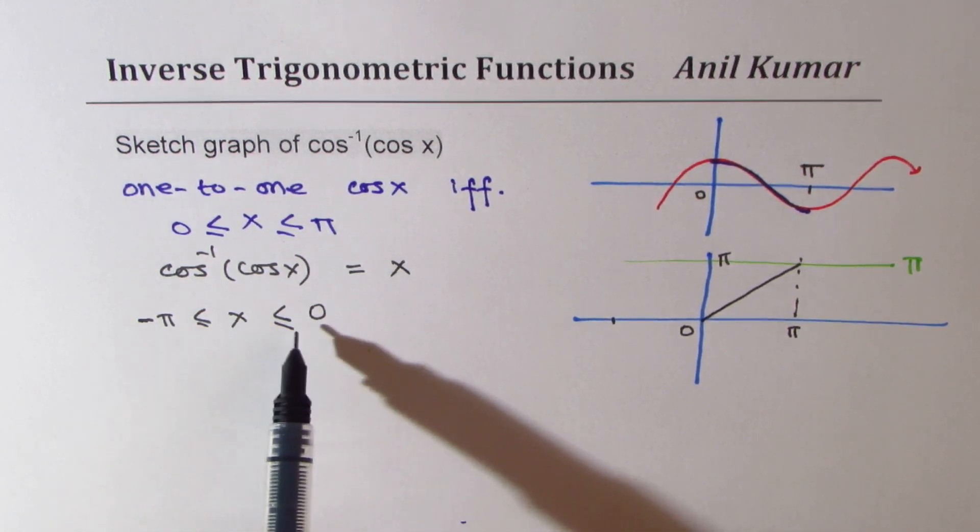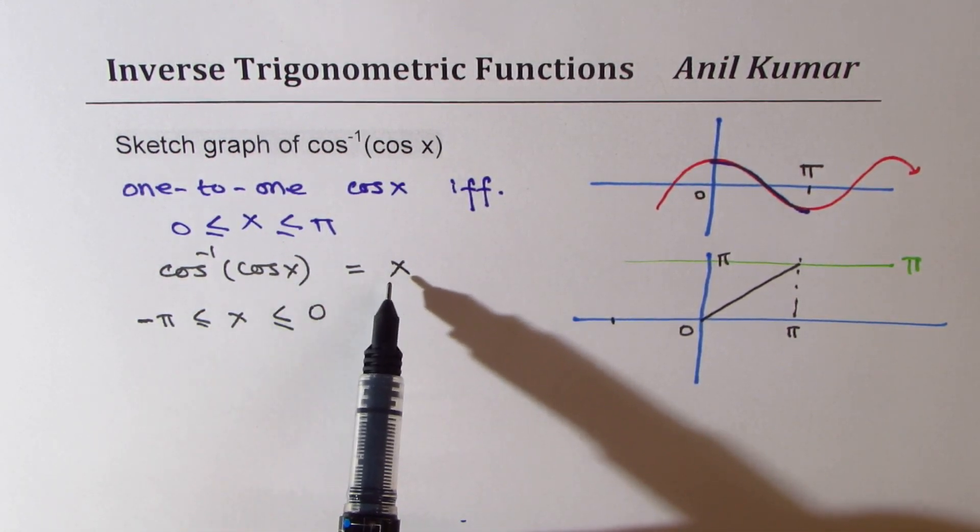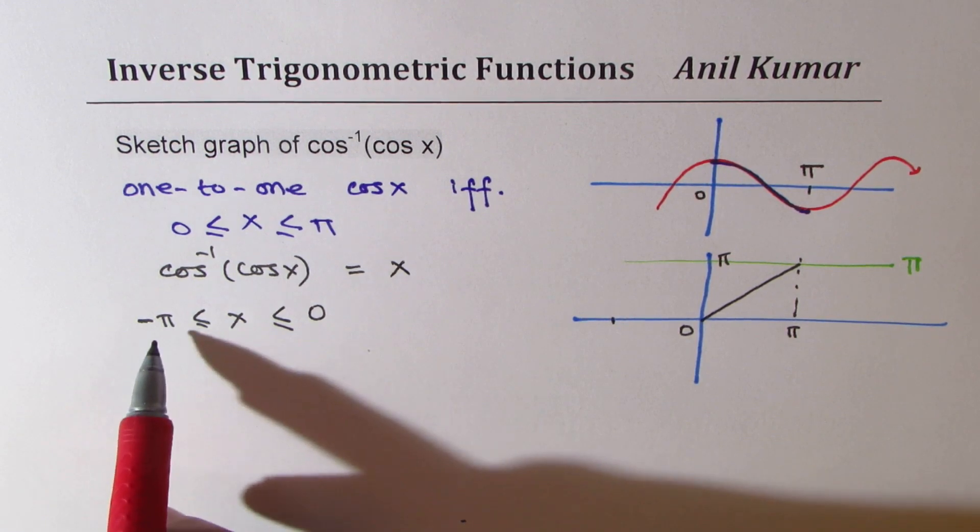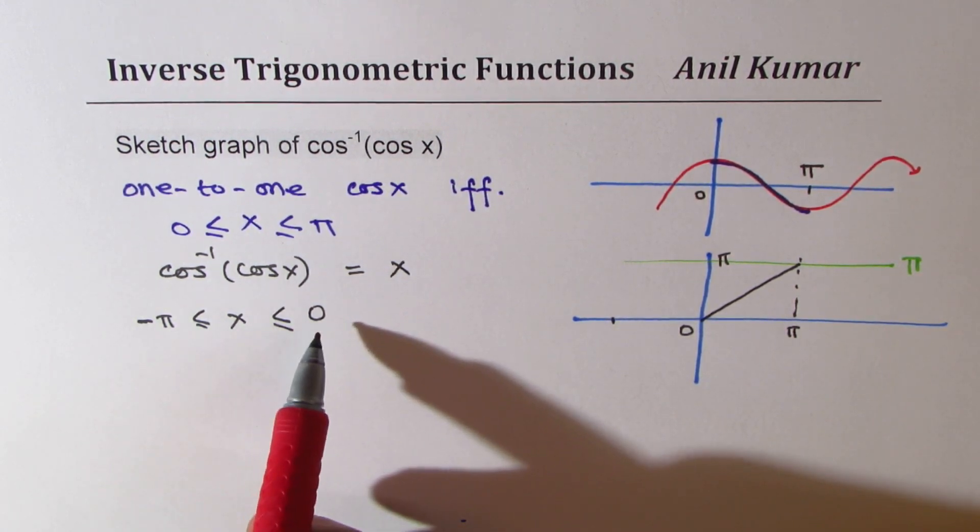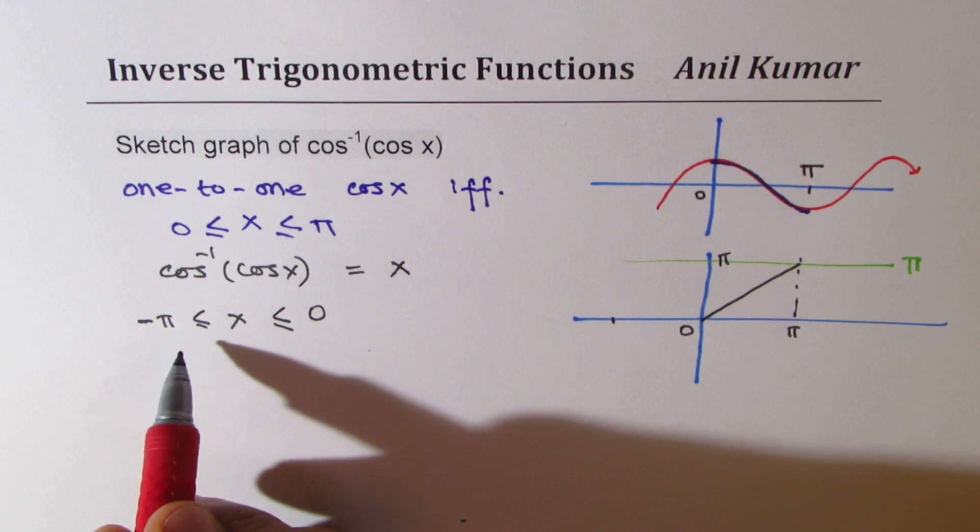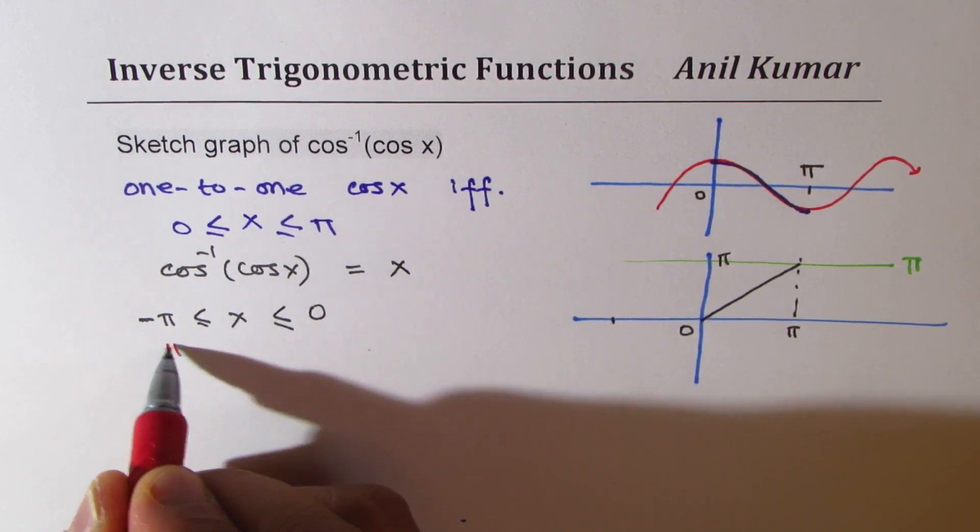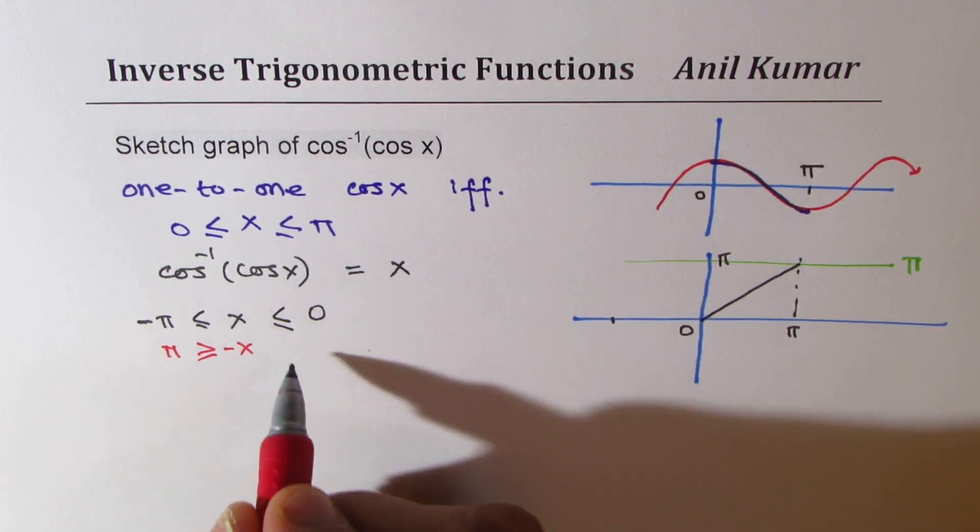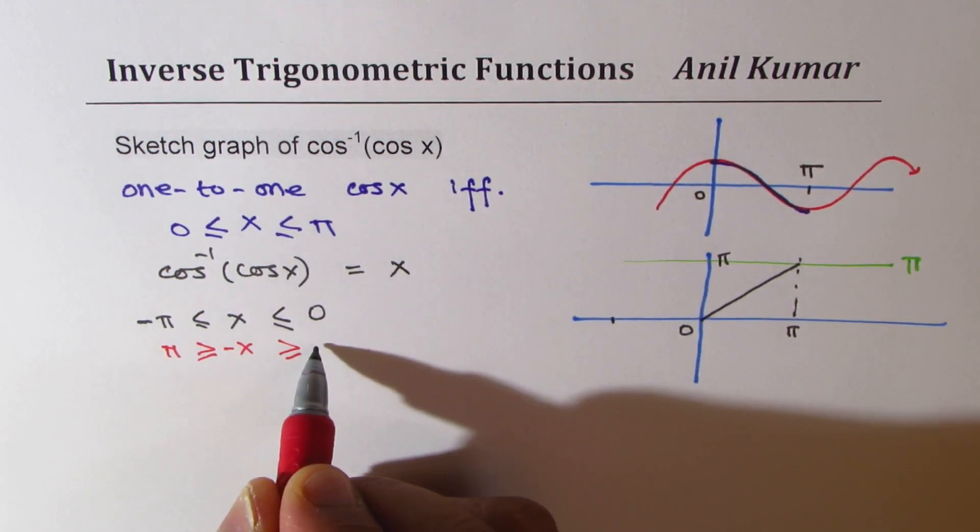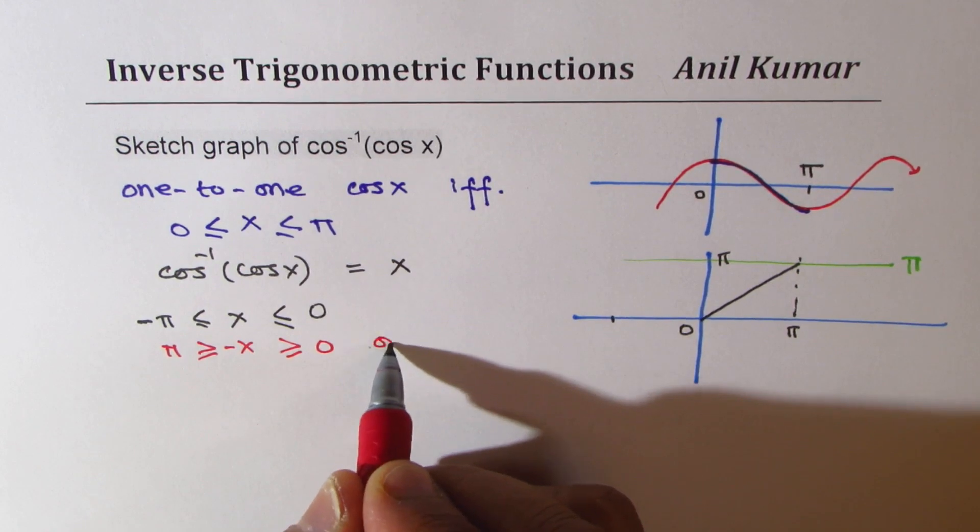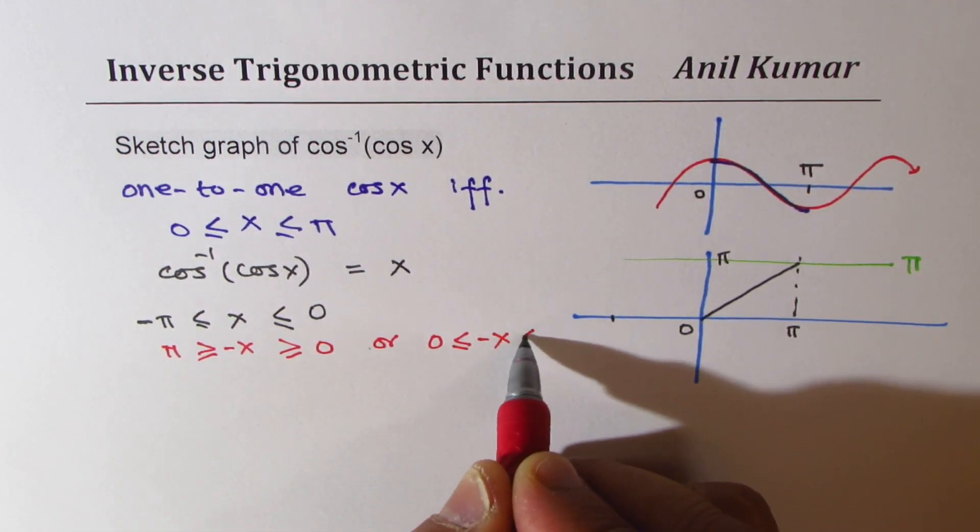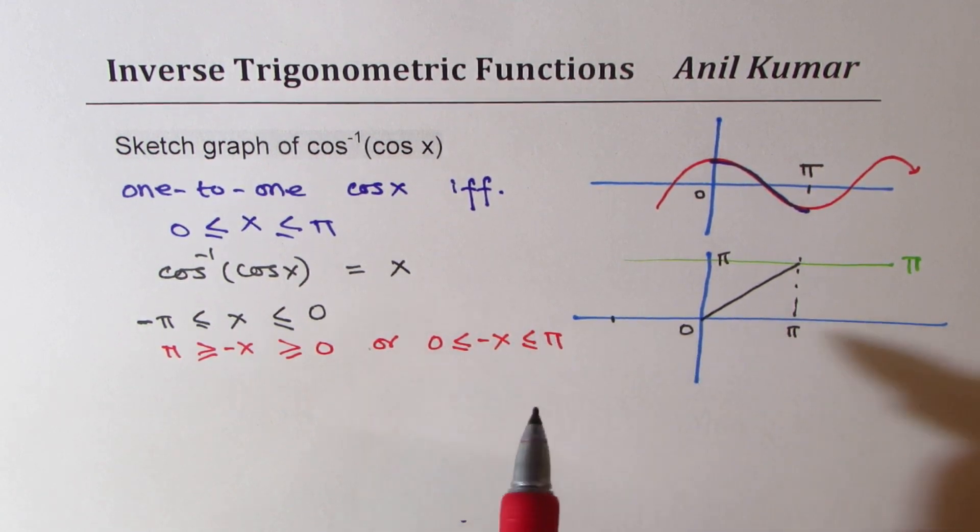What you could do here is that if I multiply by negative to all these numbers, then it becomes pi greater than or equal to minus x greater than or equal to 0. Or, I could write this as 0 less than or equal to minus x less than or equal to pi.